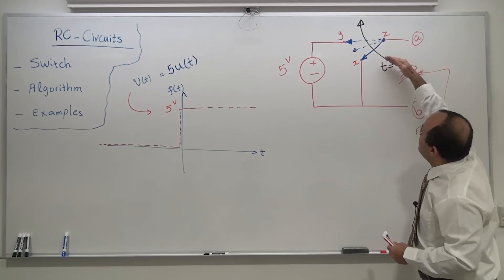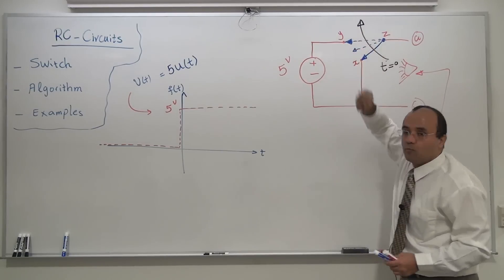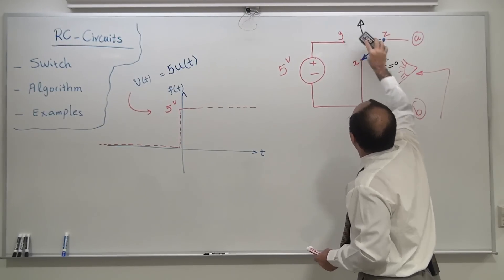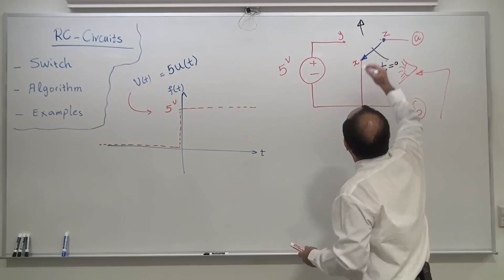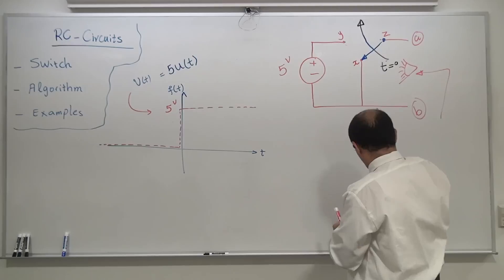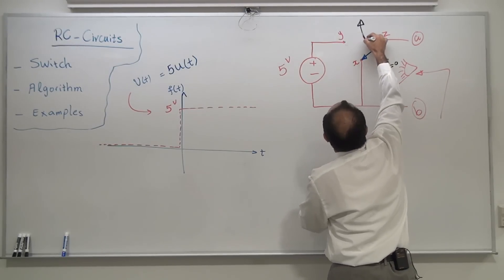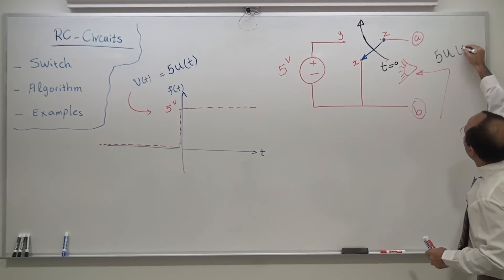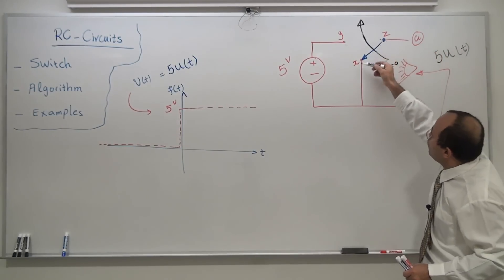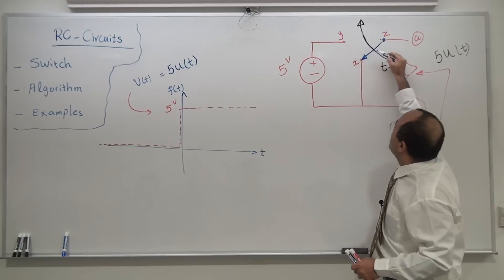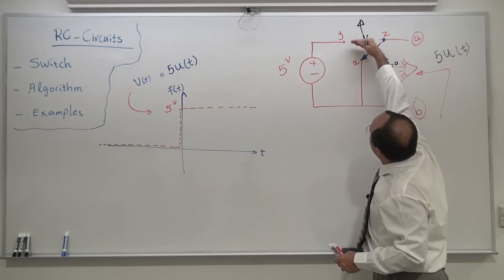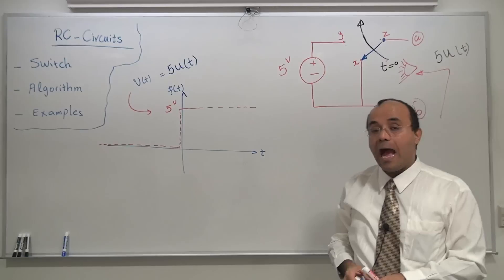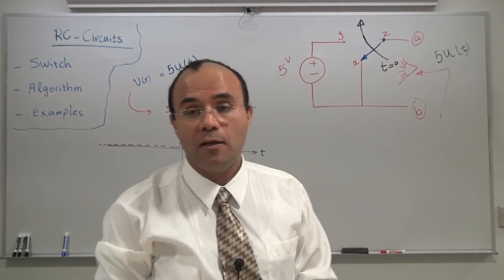At T equals zero, T zero-plus, the switch moves into Y and latches itself into Y. So if I want to create a voltage source that is a unity function, what do I see from A and B? From A and B, I see 5·u(T). For T less than zero, I see a short circuit. For T greater than zero, I see 5 times 1 — the door moves to position Y, and I get my 5 volts. That's for a voltage source.